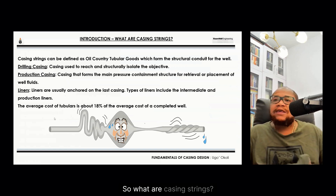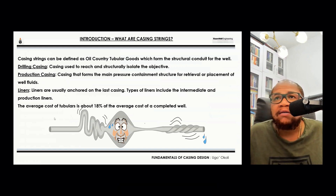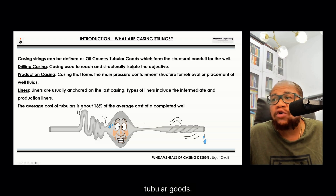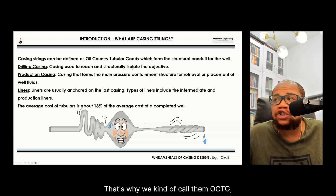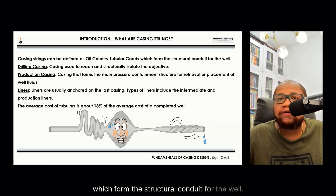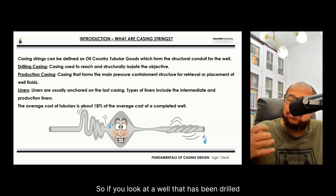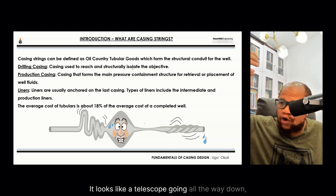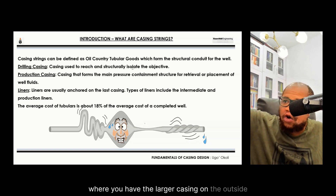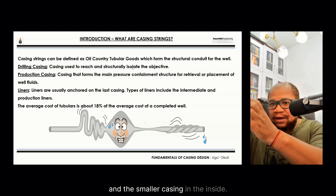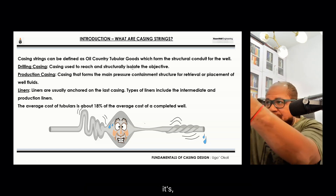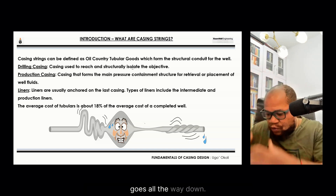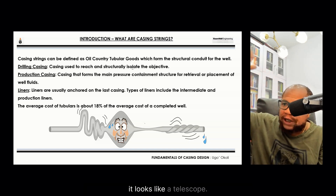So what are casing strings? Casing strings can be defined as oil country tubular goods — that's why we call them OCTG — which form the structural conduit for the wellbore. If you look at a wellbore drilled from top to bottom, it looks like a telescope going all the way down, where you have the larger casing on the outside and the smaller casing on the inside. It starts very large and thins as you go down.